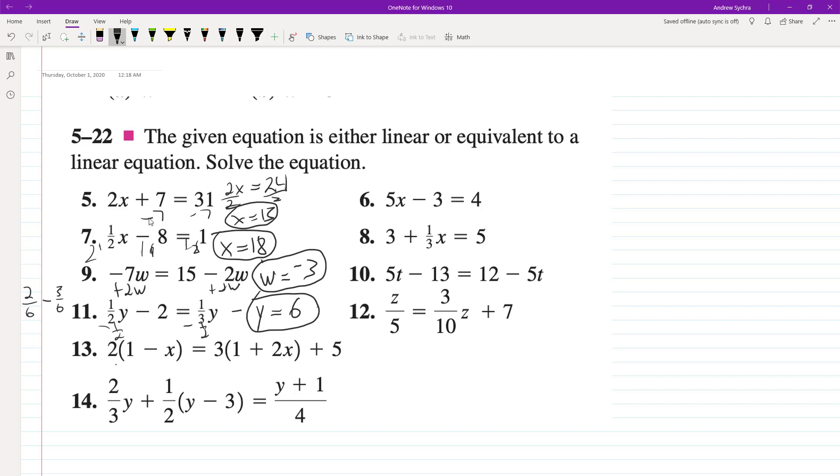Alright, so for this one, distribute the 2. So we get 2 minus 2x is equal to 3 plus 6x plus 5. So we add 2x to both sides, combine all the constants, so we get 8, and then 2 minus 8 is negative 6.